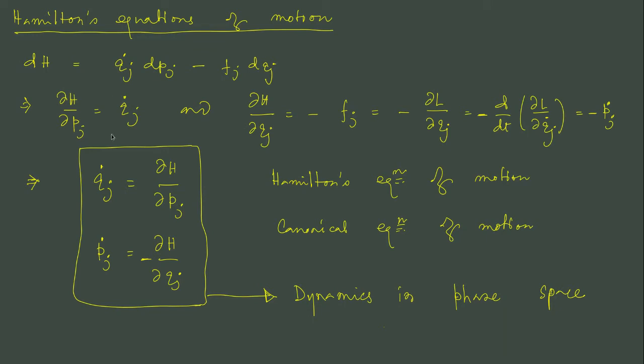Now it is easy to equate the coefficients, but the important part is what is fj? Well, fj is del L del qj, and from Lagrange's equation we already know that del L del qj is equal to the total time derivative of del L del qj dot, but del L del qj dot is pj.